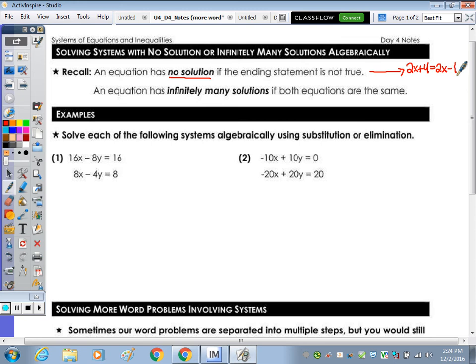To solve, you could cancel out the x's, or subtract them from both sides, and you end up with a statement that says 4 equals negative 1. Is that equal? No. From the unit we covered previously, this type of equation had no solution. Same thing with a system. If you come out with a statement that's not true, there's going to be no solution.